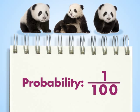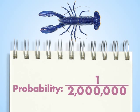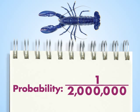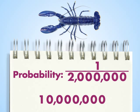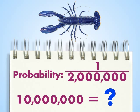A prediction is something that you can reasonably expect to happen. Let's make a prediction about blue lobsters. Blue lobsters are even more rare — only 1 in 2 million lobsters are born blue. Out of 10 million lobsters born, how many do you predict will be blue?